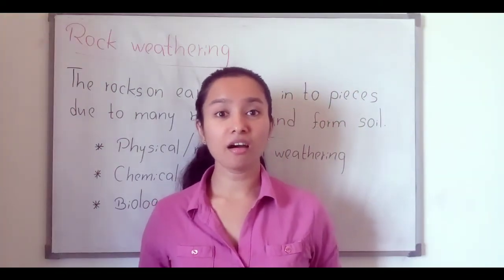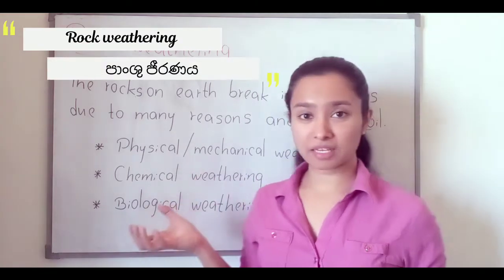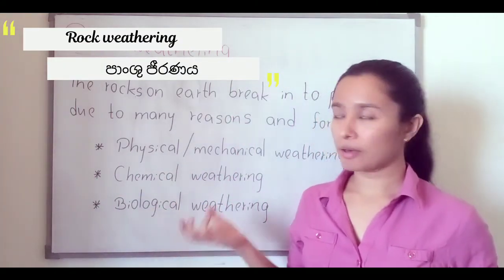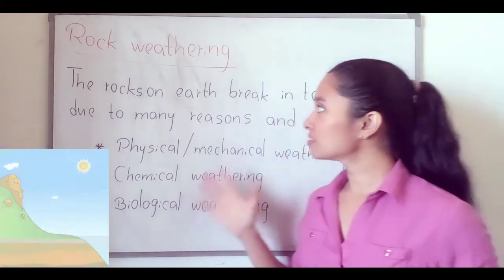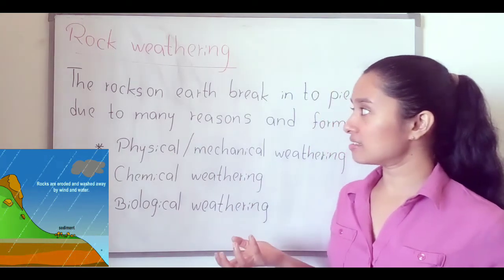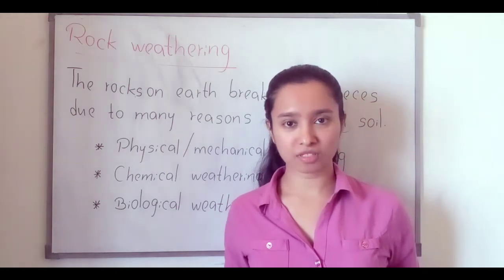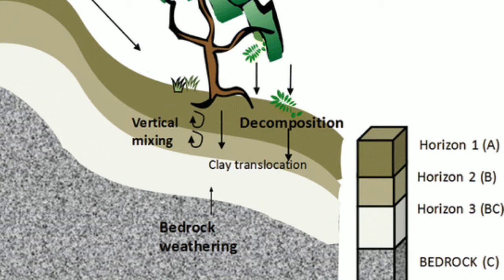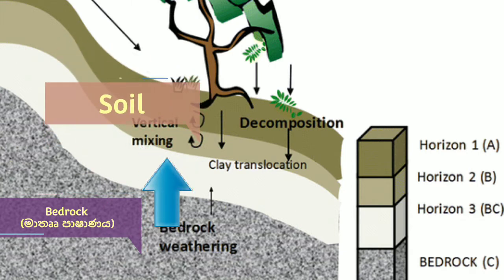Now we are going to discuss about rock weathering. What is the meaning of that? Pashaan jeerne — rocks mean Pashaan, weathering means jeerne. Due to many reasons, the rocks on earth break into small pieces and form soil. Under our earth there is a bedrock — maadro pashaane. From this bedrock, through weathering, soil is formed.